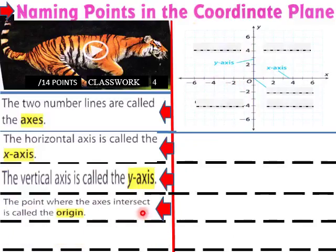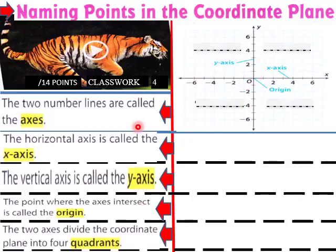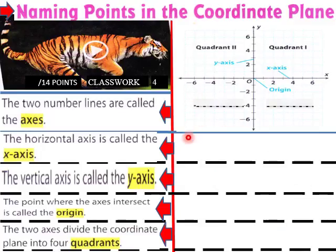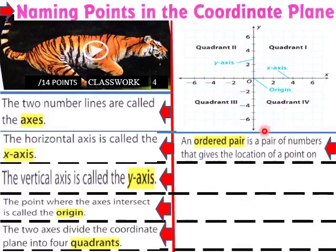The point where the axes intersect is called the origin — origin's right here. The two axes divide the coordinate plane into four quadrants, so we have four quadrants here: quadrant one, quadrant two, quadrant three, and quadrant four.